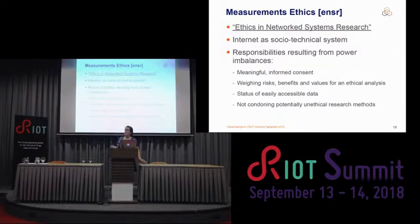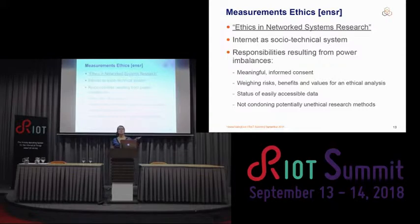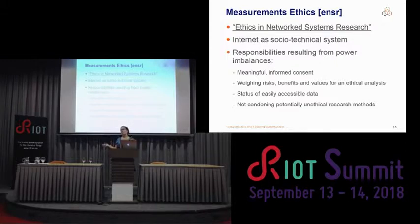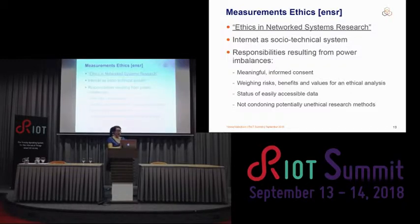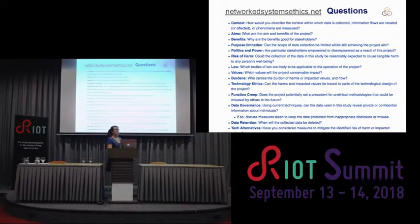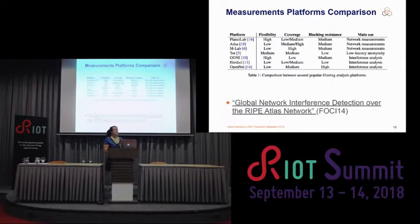We have to get meaningful informed consent before we start collecting users' data, and that is really difficult because we always think they cannot possibly understand what we are talking about — so we have to find a way to explain these things to them. We have to weigh the risks and benefits — mostly they have risks and we have benefits, so we have to balance that out. We shouldn't be tricked into saying it's easy data to collect, because the fact that it's easy doesn't mean it is ethical. And if you use somebody else's research, consider the ethics of that too.